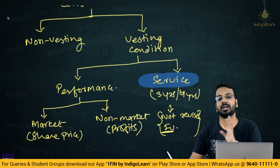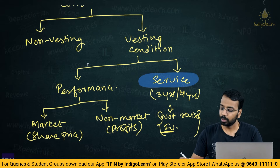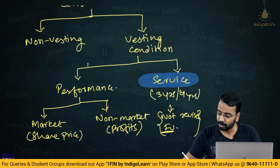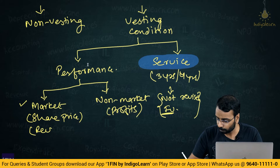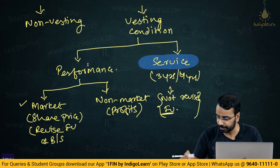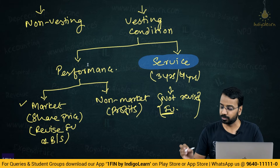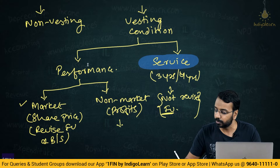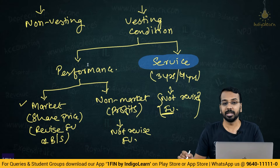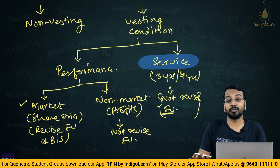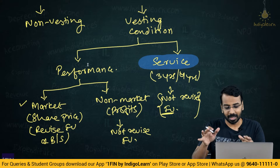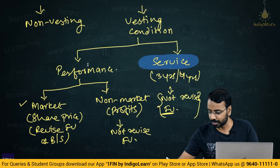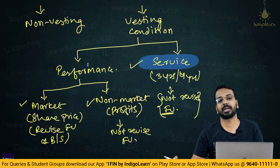For a market-based performance condition, you will revise the fair value on the balance sheet date — whenever you calculate fair value on that date, you revise. If it is a non-market-based condition, again you will not revise the fair value; you take the fair value of the grant date only. At the intermediate level, most questions tested would be based on service and non-market-related conditions.